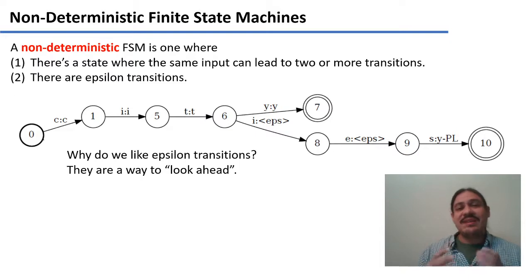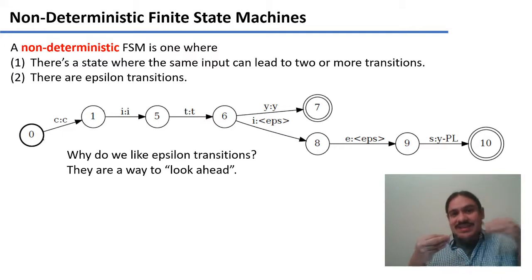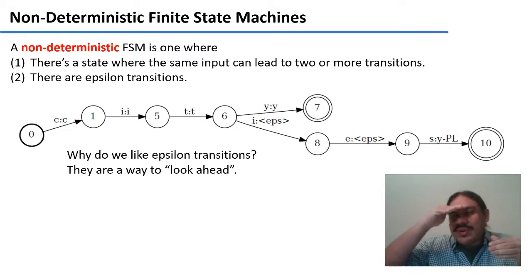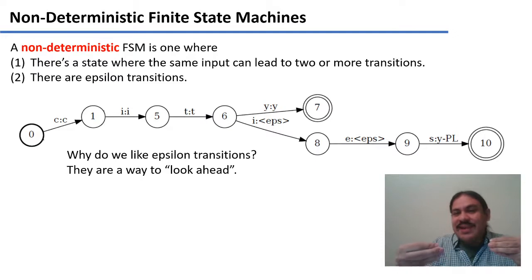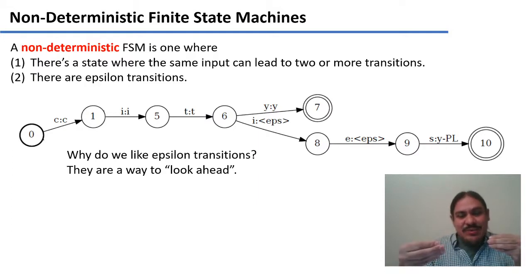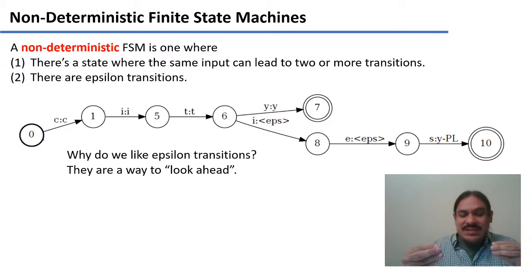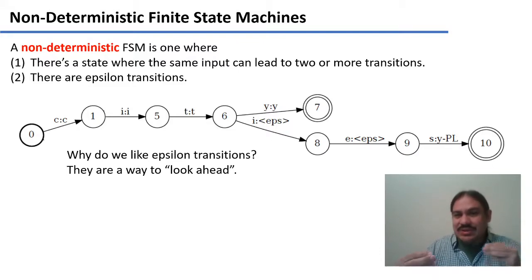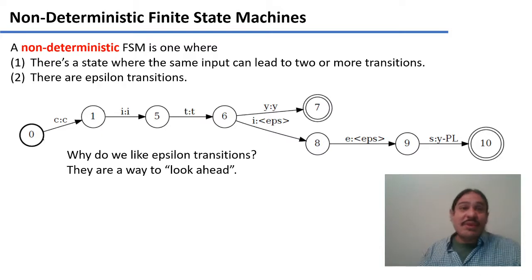Notice what happens when you're standing on state six. You have the input CIT and you've produced the output CIT. Then you go from state six and start peeking at what comes next — an I in the input, and then you wait. Finally, in state nine, you get the input S, and you know this was the word cities. You can paste the output of the transition from nine to ten into what you had before. So standing on state six, you were waiting to see if the word was actually going to be cities, peeking ahead until you got there. Epsilon transitions are very useful in this way.